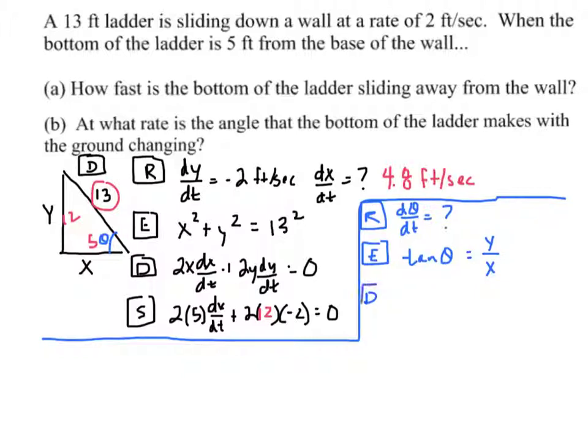So as I do the derivative, the derivative of tangent is secant squared theta, d theta dt. And the derivative of y over x, I'm going to need quotient rule. So I'm going to use low d high minus high d low, cross the line and square the low.